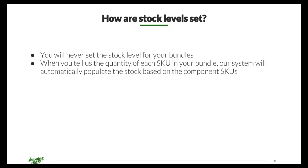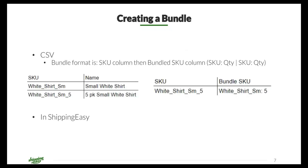When you set up a bundle within ShippingEasy, it ties the bundle itself to the individual component items. You will not be listing the number of bundles you can make in the stock column of your inventory — you only ever need to list the quantity available for the component items. ShippingEasy will automatically populate the quantity of bundles based on the maximum number that can be made from the components. That quantity is then sent back to your two-way sync platforms. If a component item runs out of stock, that bundle will be listed at zero.